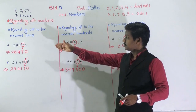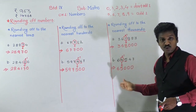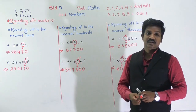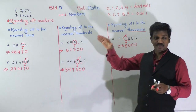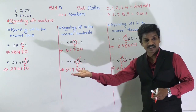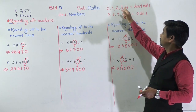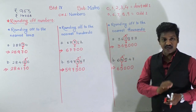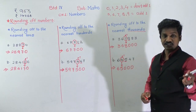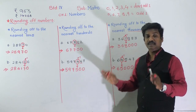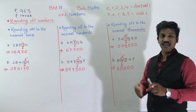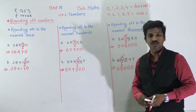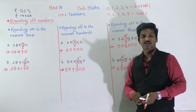So we have rounded off numbers to nearest tens, nearest hundreds, and nearest thousands. Similarly, we can round off to the nearest ten thousand and nearest lakh using the same rules: find the particular digit, circle it, see the next digit. If next digit is 0, 1, 2, 3, or 4 — don't add 1, take that digit as it is, write zeros for next digits, and take the before digits as they are. Same rules apply for ten thousand and lakh. Now pause the video, write this in your notebook, and then we'll solve the practice.